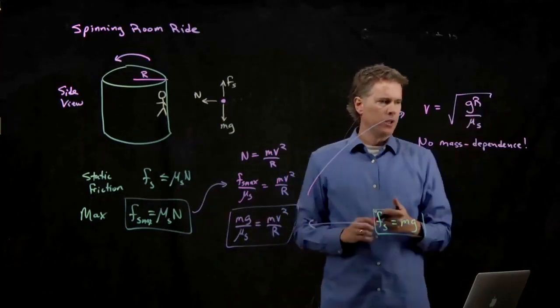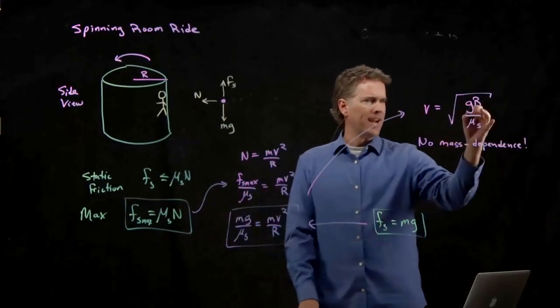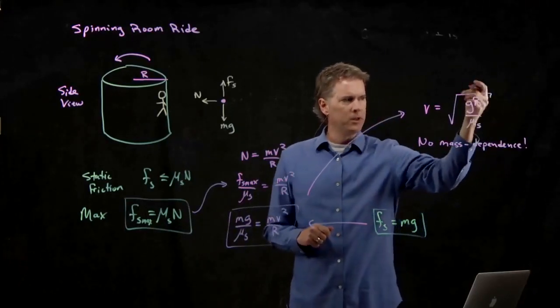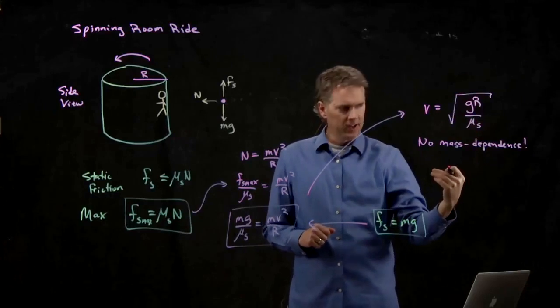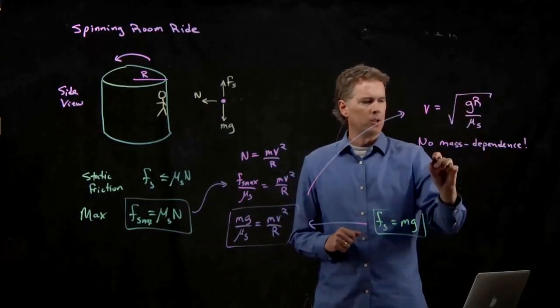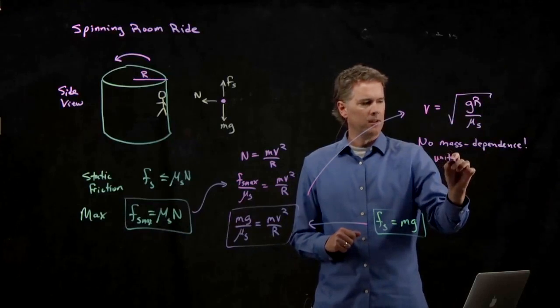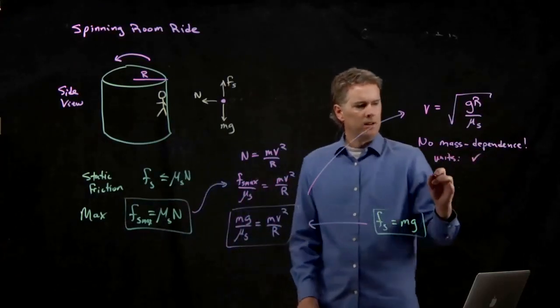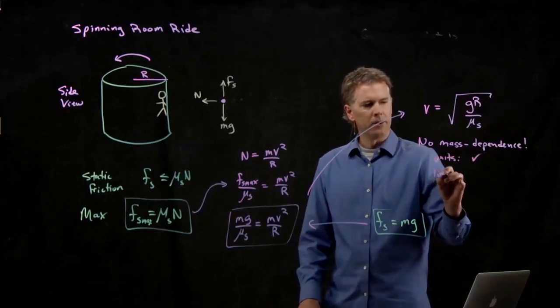Likewise, the units look like they work out, right? We've got G, which is meters per second squared. We're going to multiply by R, which is meters. So we get meters squared per second squared. When I take the square root of that, it looks like we're going to get meters per second. So the units work out.